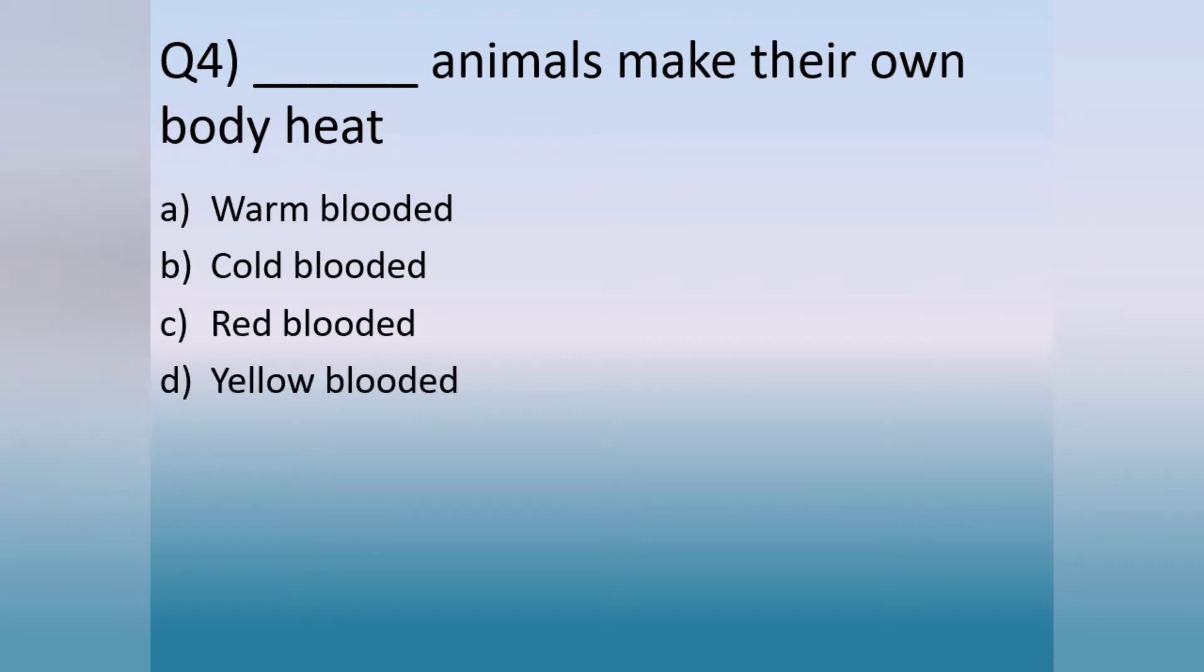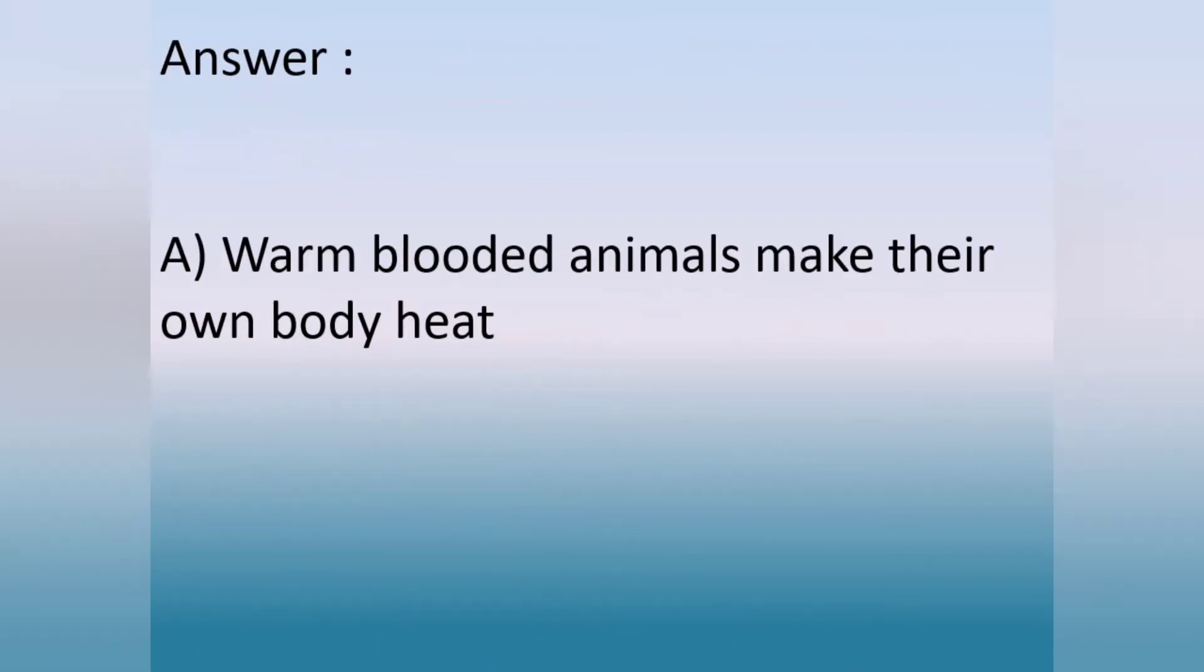Question number 4. Dash animals make their own body heat. A. Warm-blooded. B. Cold-blooded. C. Red-blooded. D. Yellow-blooded. The answer is option A. Warm-blooded animals make their own body heat.